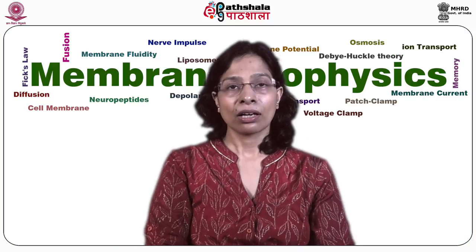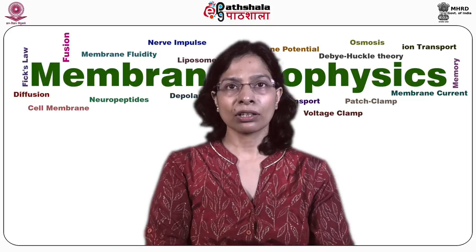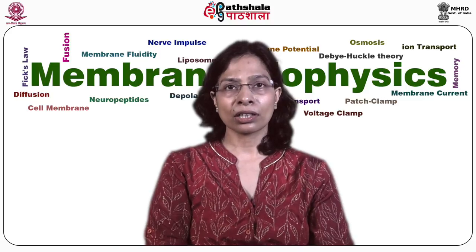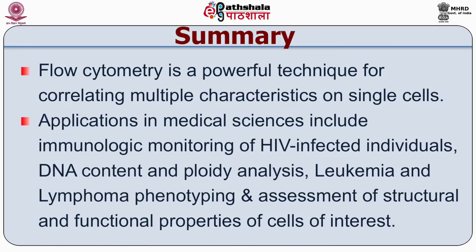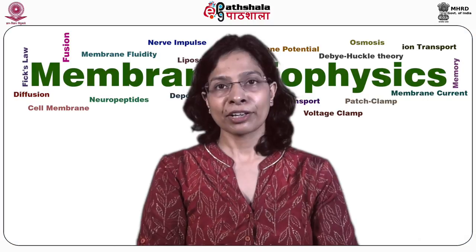To summarize, flow cytometry is a powerful technique for correlating multiple characteristics on single cells. The applications in medical sciences include, but are not limited to, immunological monitoring of HIV-infected individuals, DNA content and ploidy analysis, immunophenotyping for the diagnosis of leukemia and lymphoma, assessment of prognosis, and assessment of other structural and functional properties of cells of interest. Thank you.